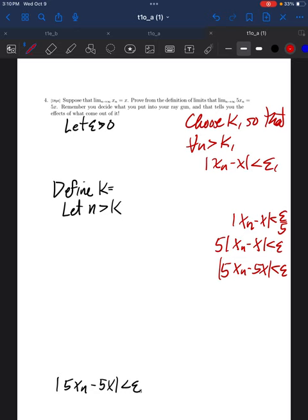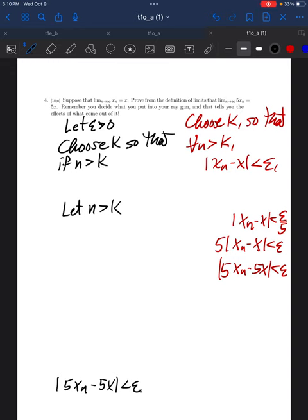And I get xn minus x is less than epsilon over 5. And that's it. So I can just choose k so that if n is greater than k, then xn minus x is less than epsilon over 5.